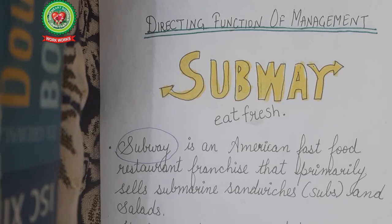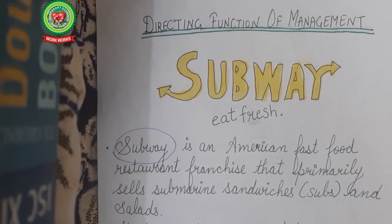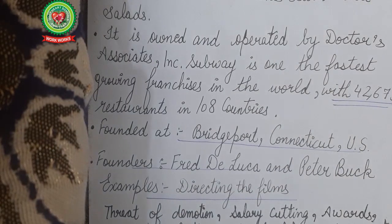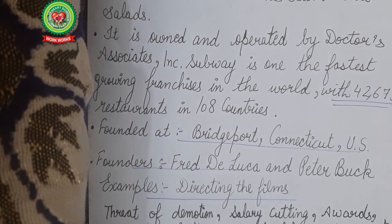Before proceeding, let us go through the directing function of management in Subway, a catering management company. You all must be familiar with Subway — Eat Fresh. It has many branches and restaurants. Subway is an American fast food restaurant franchise that primarily sells submarine sandwiches, subs, and salads. It is owned and operated by Doctors Associates. Subway is one of the fastest growing franchises in the world with 42,673 restaurants in 108 countries, founded in Bridgeport, Connecticut, US, by Freddy Luca and Peter Burke.